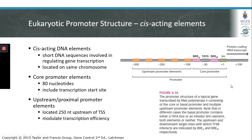Looking back at the core promoter, there is a sequence called INR, which refers to an initiator sequence. The initiator sequence can serve as a binding site for RNA polymerase 2, and may be present along with the TATA box. In some cases, the initiator sequence alone is sufficient for binding of RNA polymerase 2, without a TATA box.